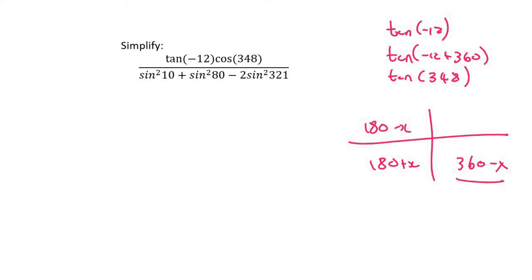Now, that's in this quadrant. So if you had to go do the whole reduction thing, you would eventually get tan 12. But tan is negative in that quadrant, so it's going to be negative tan 12.